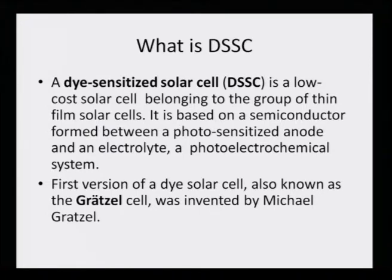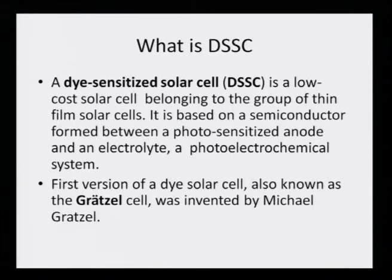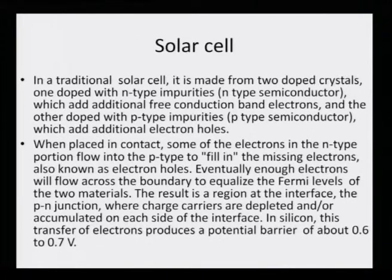The first version of the dye solar cell, also known as the Grätzel cell, was invented by Michael Grätzel. It is more popularly known as the Grätzel cell because that was the first model of trapping solar energy and converting it into electrical energy. We will see where the dye plays a role.